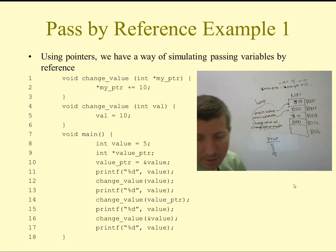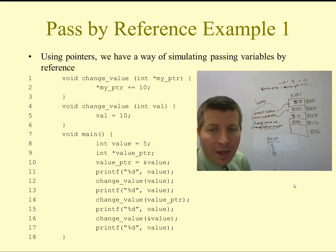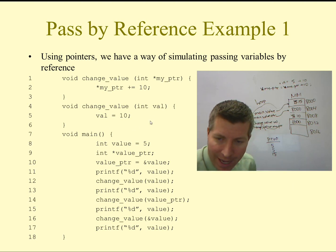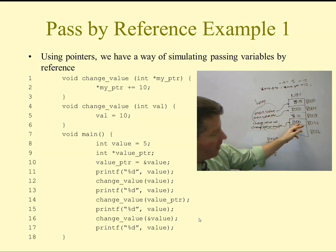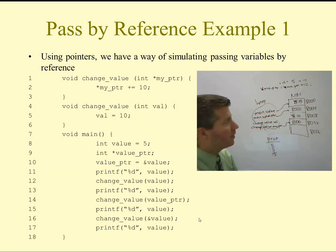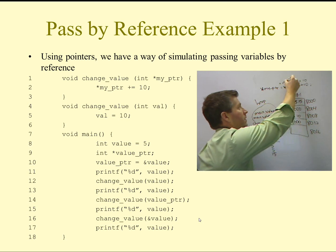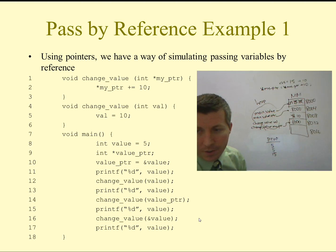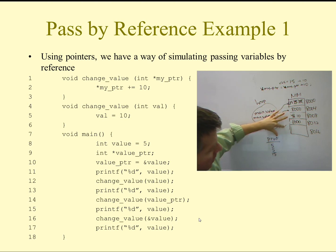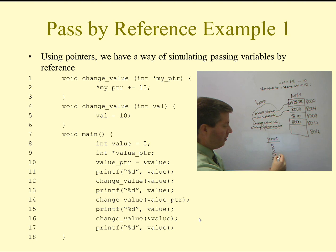On line 16, I'm calling change_value and passing in ampersand value. This is not passing by reference — instead, this is getting the address of the value variable and passing it in. If I wanted to pass the variable by reference, I would have had the ampersand in front of the variable in the parameter list of the function, not where I called the function. So my_pointer gets the address 8,000, dereferences it, grabs 15, adds 10 to get 25, and puts 25 back. On line 17, it prints out value, which is now 25.